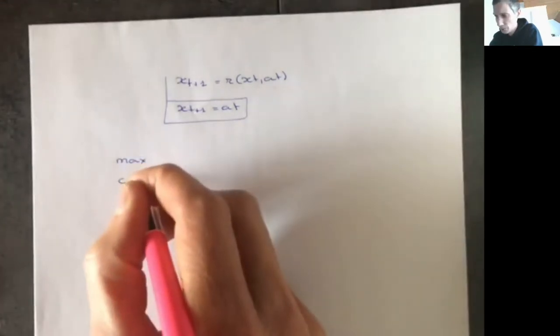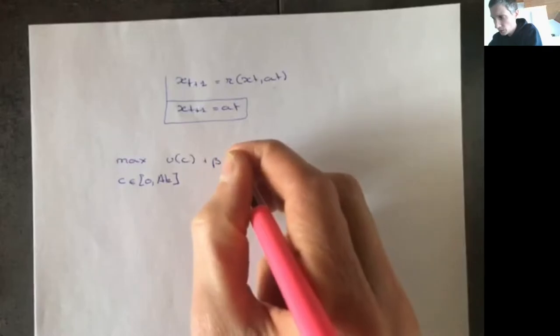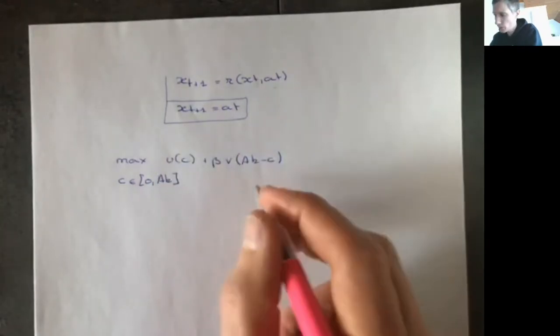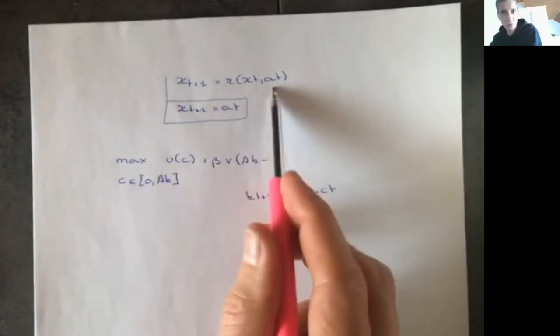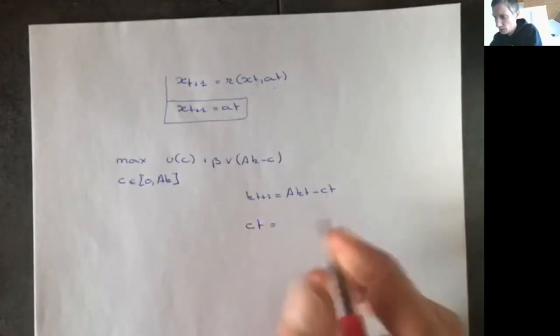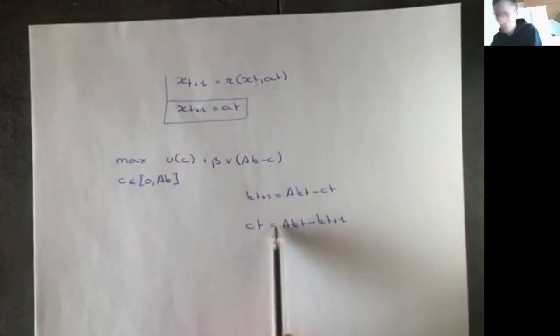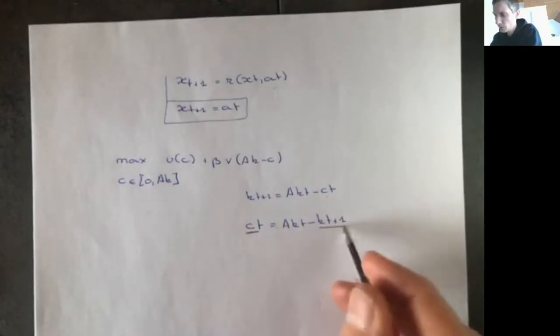For example, last time we discussed the AK model where we had the Bellman equation: maximize over consumption between zero and Ak of u(c) + beta*V(Ak - c), where k_{t+1} = Ak_t - c_t. We can rearrange this to get c_t = Ak_t - k_{t+1}, and then substitute into the Bellman equation, changing our decision variable from c_t to k_{t+1}.